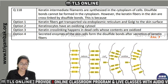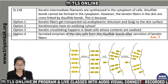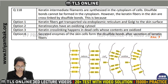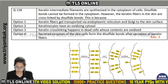Keratin intermediate filaments are synthesized in the cytoplasm of the cell. Disulfide bonds cannot be formed in the cytoplasm because an oxidative environment is required. However, the keratin fibers in the skin are crosslinked by disulfide bonds. This is because keratin crosslinking happens in dead cells whose contents are oxidized.